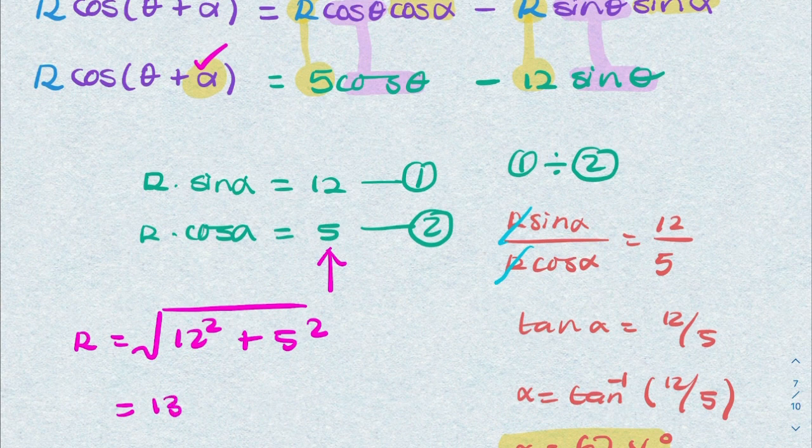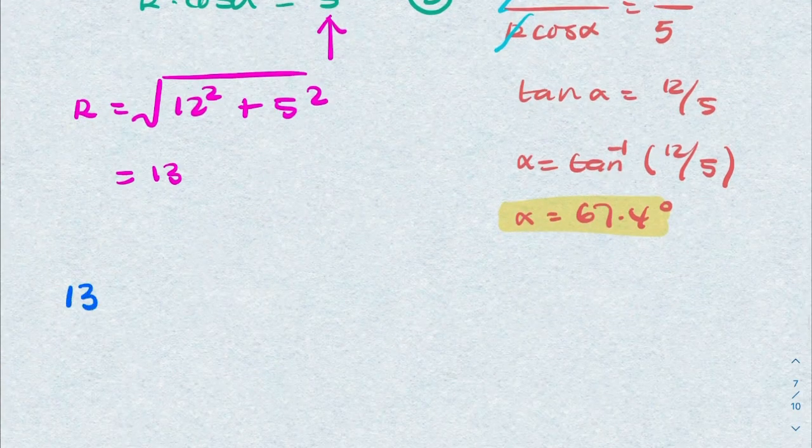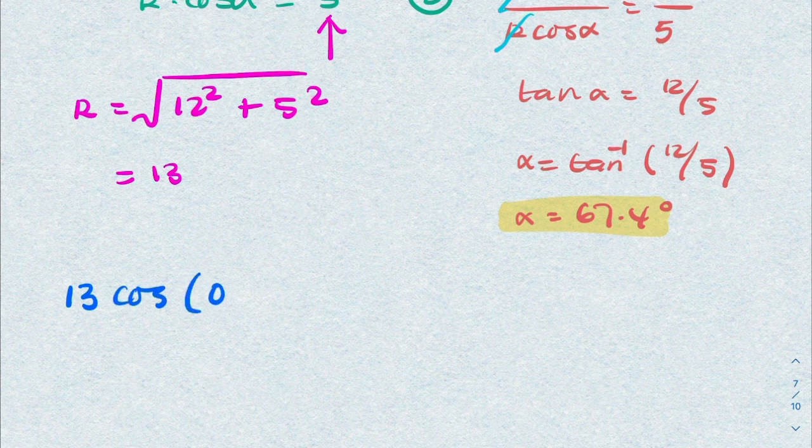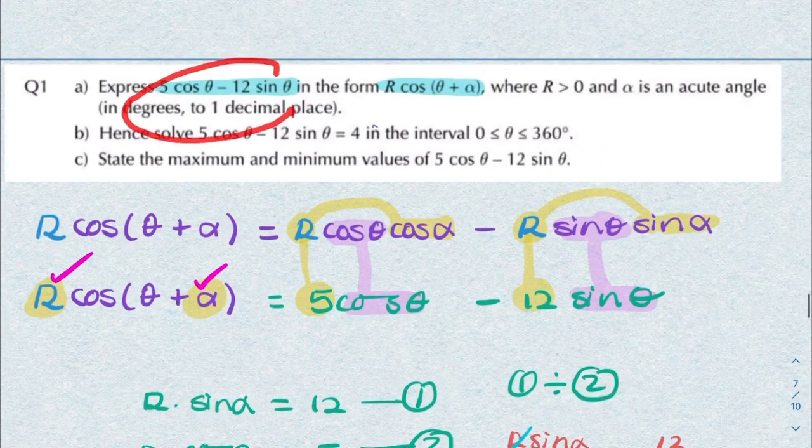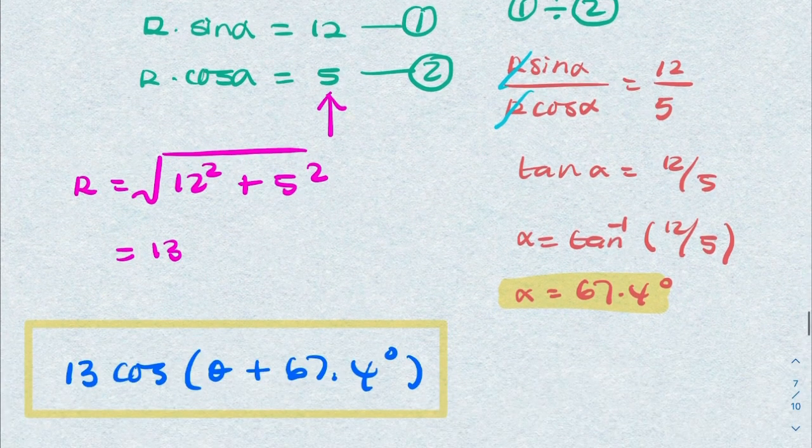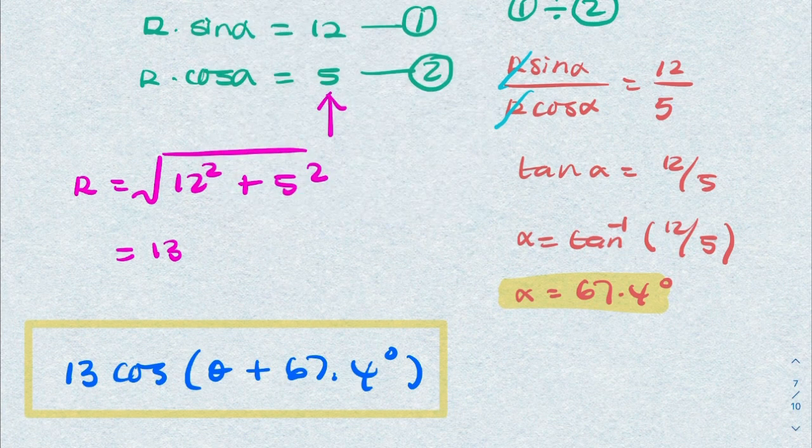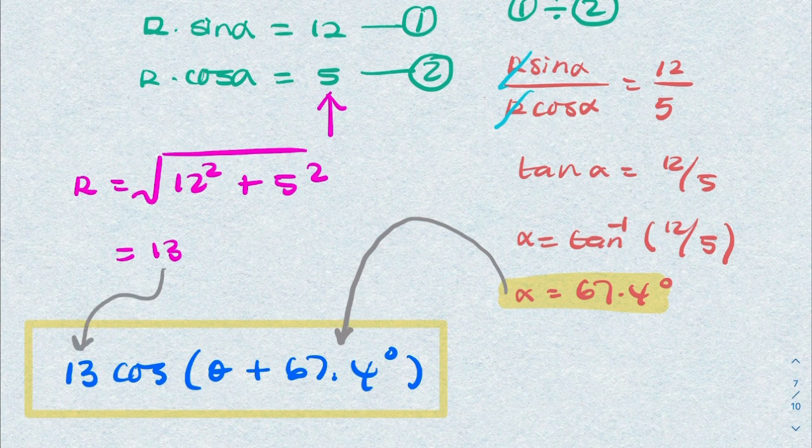So now we know R and alpha, we can now write the final answer as 13 cosine theta plus 67.4. This is the final answer—they said express this in this form. Once you've found R and you've found alpha, you then insert these numbers here and here, and that is your final expression.